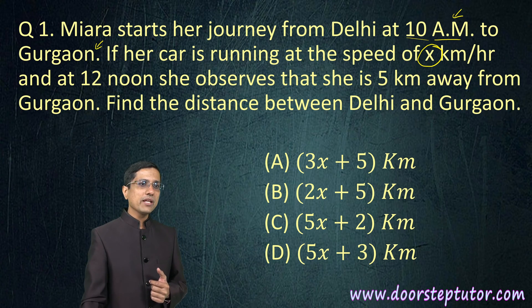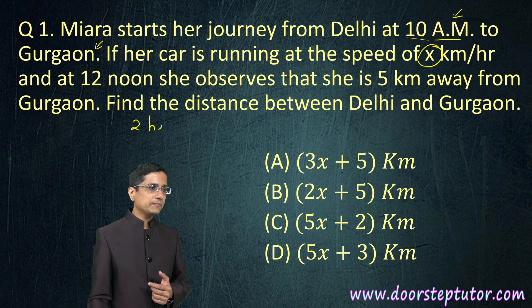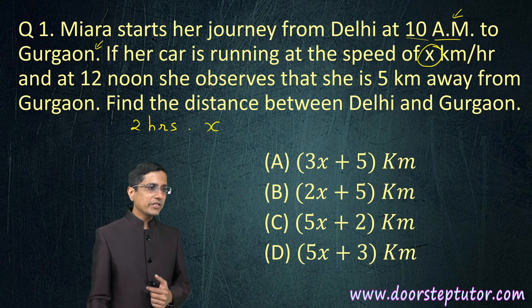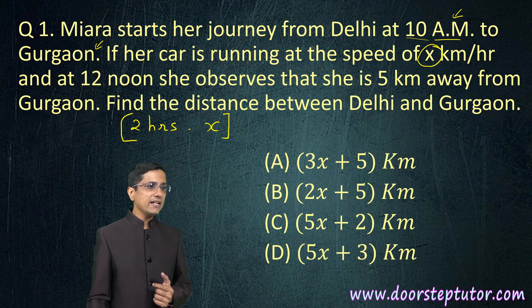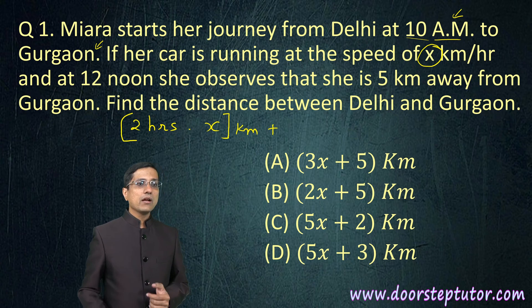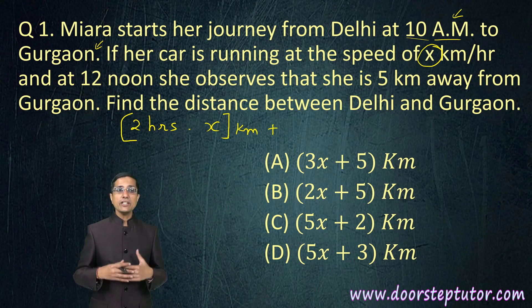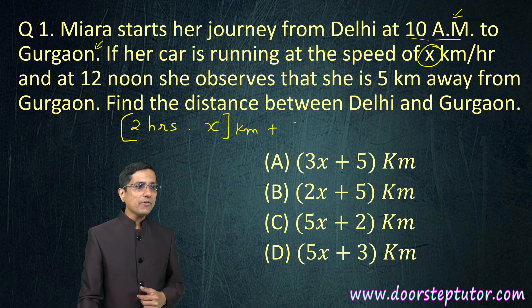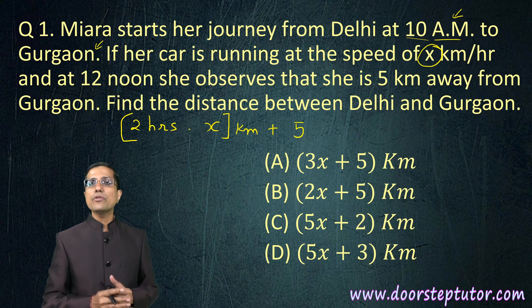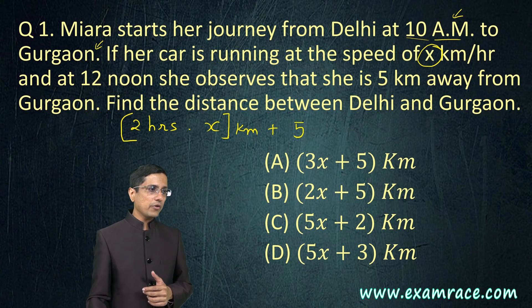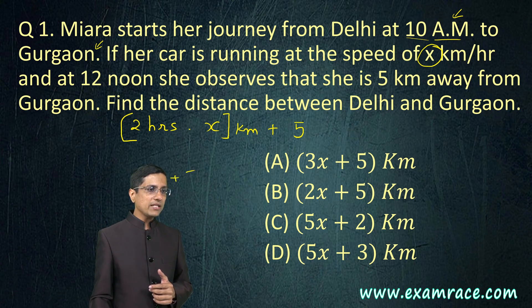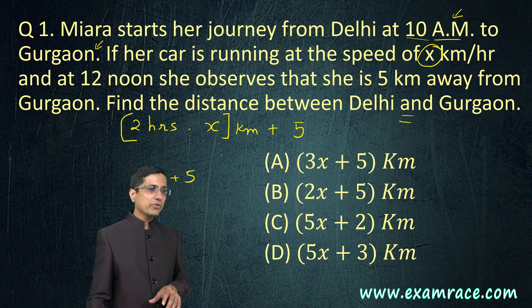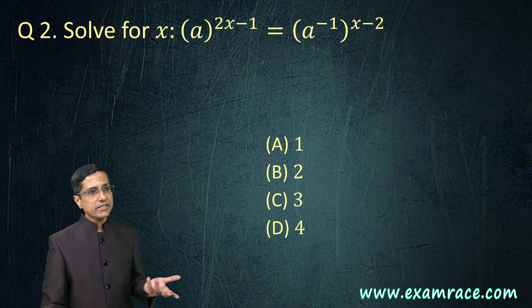What is the time traveled? It is from 10 a.m. to 12 noon, so that is 2 hours and she travels it at the rate of X km per hour. This is the distance that she has travelled in kilometres. Of course, at this point, she has not reached Gurgaon, she is 5 km away from Gurgaon. How much would she need to travel to reach Gurgaon? 5 km more. And of course, this would be the distance between Delhi and Gurgaon. So, our answer is 2X plus 5. Very simple, the question is really asking you to translate from this language to the mathematics right here.